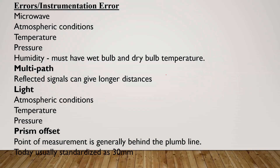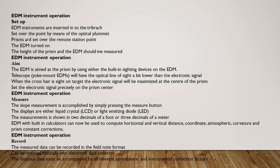Prism offset — the point of measurement is plumb length behind the prism. The total offset is normally 30mm. For EDM instrument operations, set up the EDM using an optical plummet, then point at the remote station. The EDM is turned on and the height of the EDM is measured. Measurement data in the field note format includes slope measurements such as 1-210m foot and 2-3-100m.